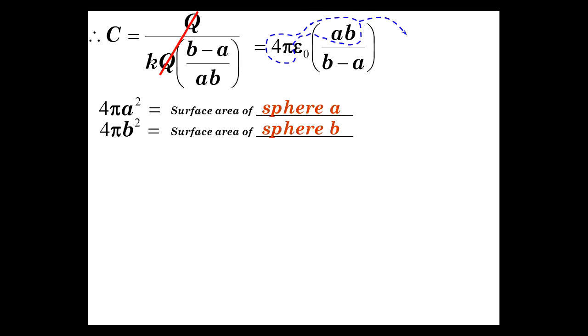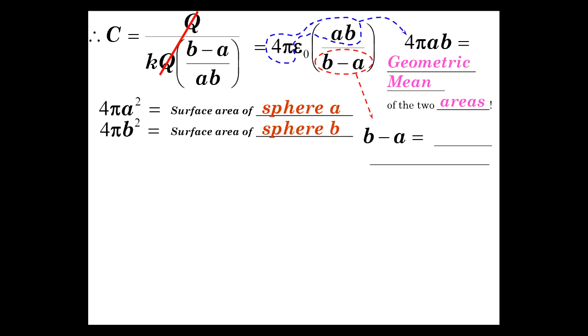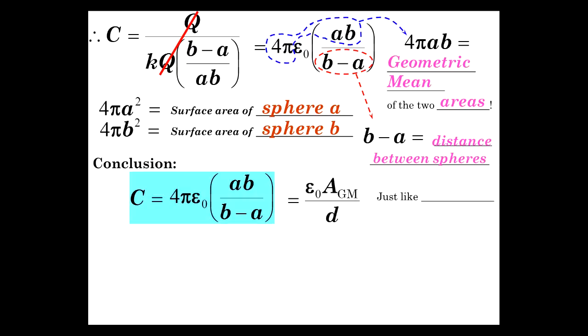And notice what we have here. 4 pi A times B. So, there's a linear dimension twice. So, it's got the dimensionality of a surface area. And, in fact, 4 pi AB is the mean, the geometric mean of the two areas. 4 pi A squared and 4 pi B squared. And then, the distance between those spheres is B minus A. So, B minus A is the distance between the spheres. Conclusion to all this is with the spherical capacitor. We have that C is 4 pi epsilon 0 AB over B minus A.